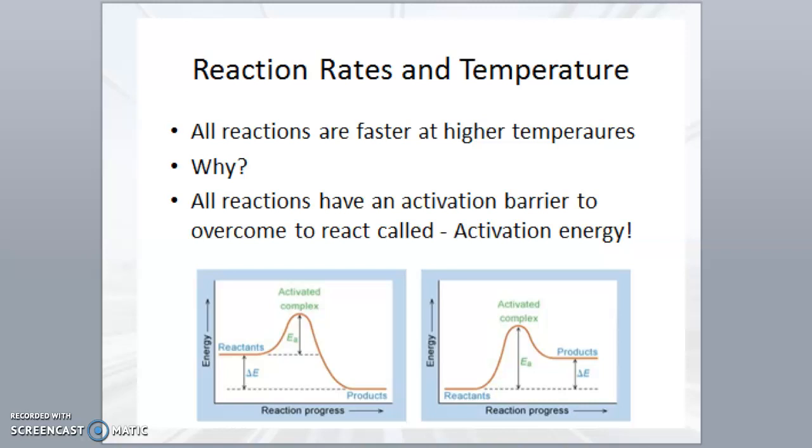Early in the chapter, we introduced potential energy diagrams. Now, we'll look at them in more detail. Notice that the reactants have to gain energy to the amount of the activated complex before they can go to products. The amount of energy needed is called the activation energy. A good example of this is burning firewood.